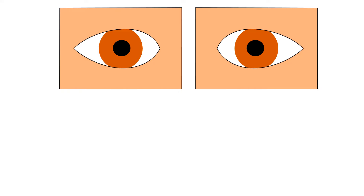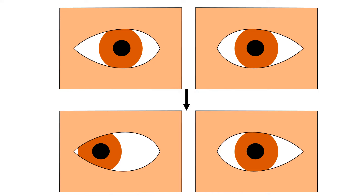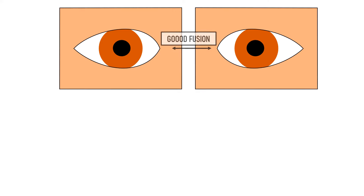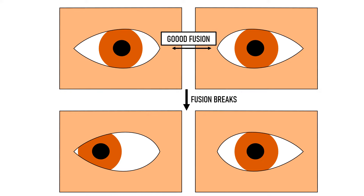Suppose another patient walks into your OPD complaining of squinting, but his eyes appear straight to you. On first impression it may seem like this person does not have any squint. But after you do certain tests, you realize that this patient does have a squint which was initially hidden but is now revealed — this is a phoria or latent squint. Latent squint is kept hidden because of fusion, which allows the patient to maintain ocular alignment. Once fusion is broken by tests or due to physical or mental fatigue, he can no longer maintain straight eyes and develops a squint.